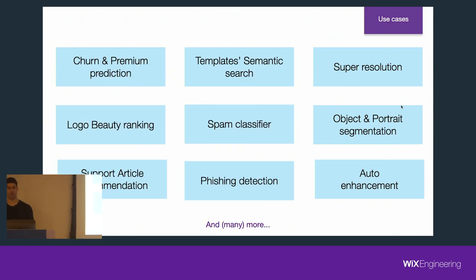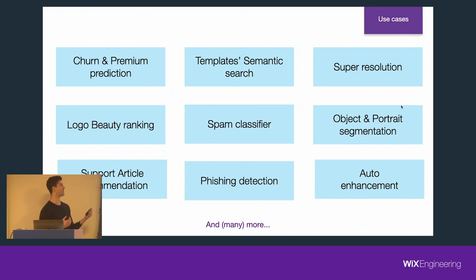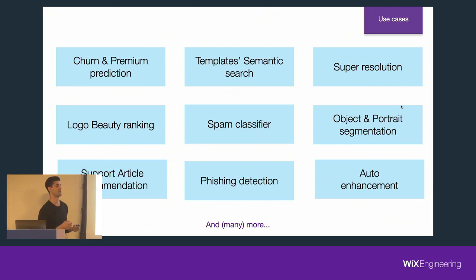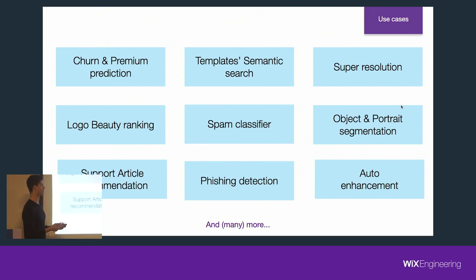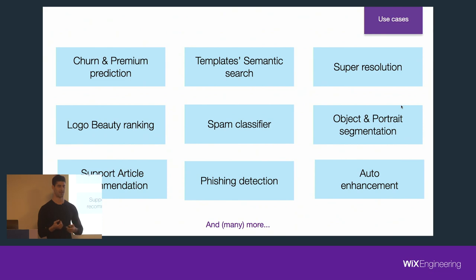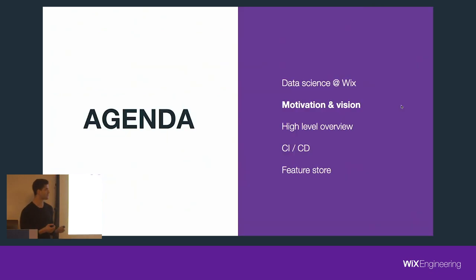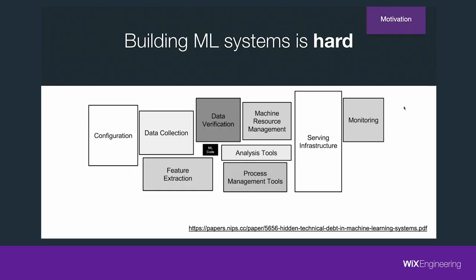We briefly went through almost all of the models in this slide. As you witnessed, we have a very wide range of model types we need to support in production: classification, regression, ranking, recommendation, deep learning, and much more. Most of our models require specific training resources, tailor-made feature extraction processes, and different deployment methodologies. The truth is that building ML-based systems is hard — they're hard to build, hard to maintain, and hard to monitor.